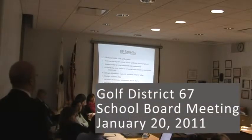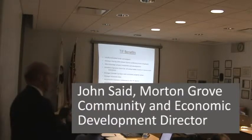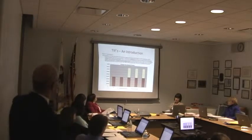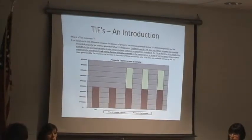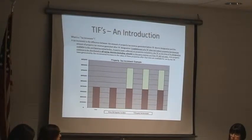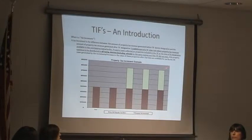I asked what the downsides were to the TIF. There are various arguments that have been identified against TIF, which I feel can be countered with positives. We talked about that lag of tax collection because of the increases over time — that the various taxing bodies, including the village, the school district, and the county, don't collect that incremental increase, that yellow portion, above the base year amount. However, the counterargument is that that amount is invested in the TIF to increase property values, and at the end of the life of the TIF, everybody gains from the larger amount.